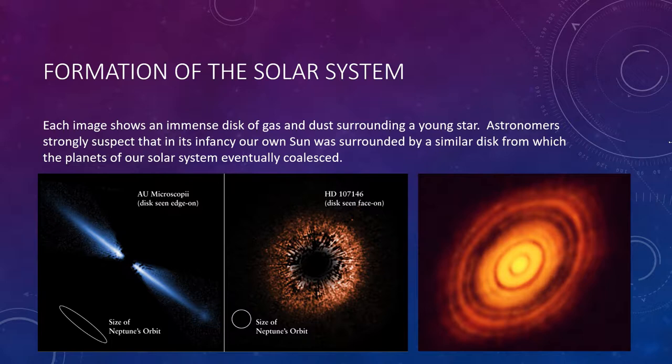What did our solar system look like before the planets were fully formed? The answer may lie in these remarkable images from the Hubble Space Telescope. Each image shows an immense disk of gas and dust surrounding a young star. Astronomers strongly suspect that in its infancy, our own sun was surrounded by a similar disk from which the planets of our solar system eventually coalesced.